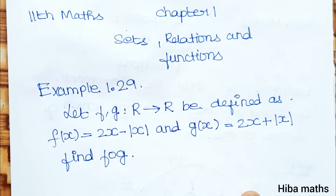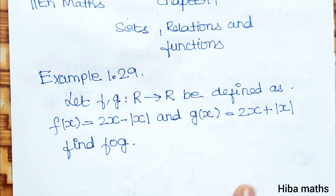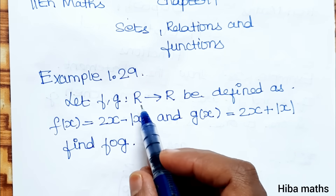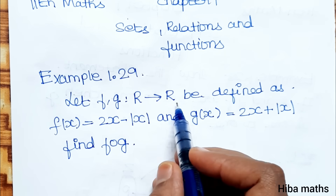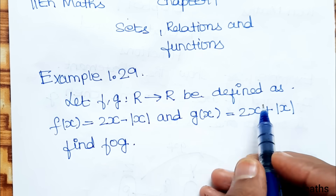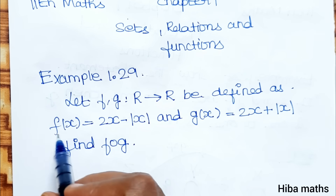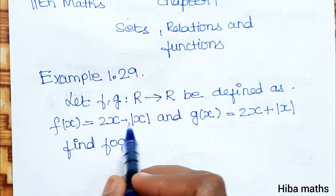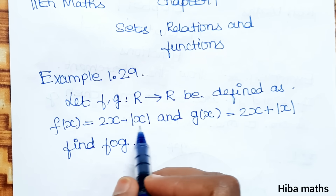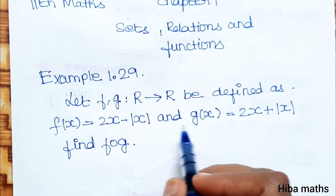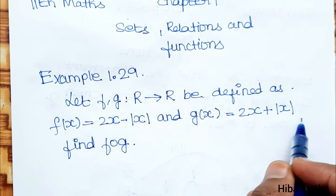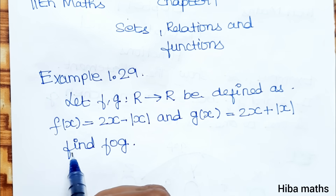Example 1.29 — let f and g from R to R be defined as f of x is equal to 2x minus modulus of x, and g of x is equal to 2x plus modulus of x.